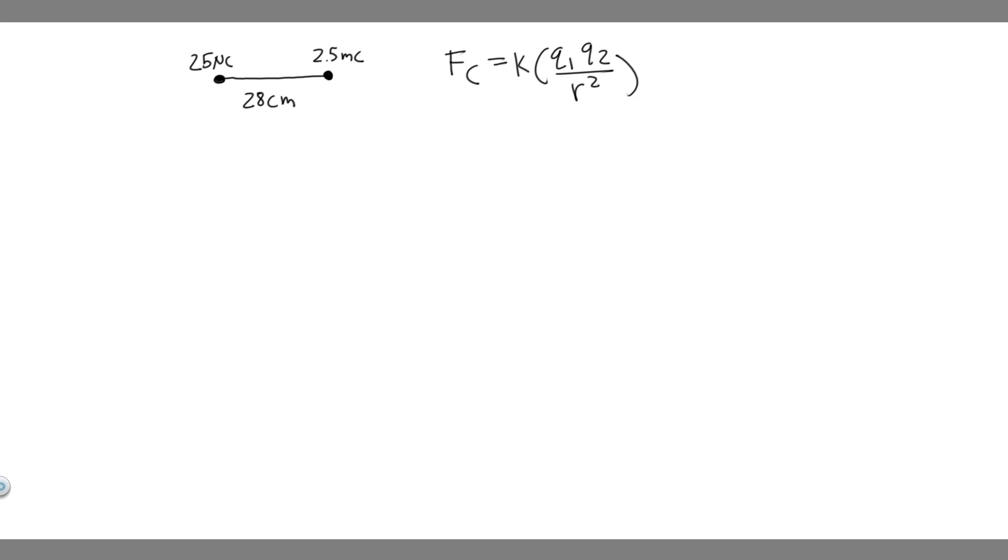So what is r? r is basically the distance between the two particles. Q1 and Q2 are basically the charge of both your particles. And then k is just a constant. So k is going to be the same, it's just a number you have to memorize. k equals 8.988 times 10 to the 9 newton meters squared over coulombs squared. So that's just k, a constant we know. We just have to plug it in.